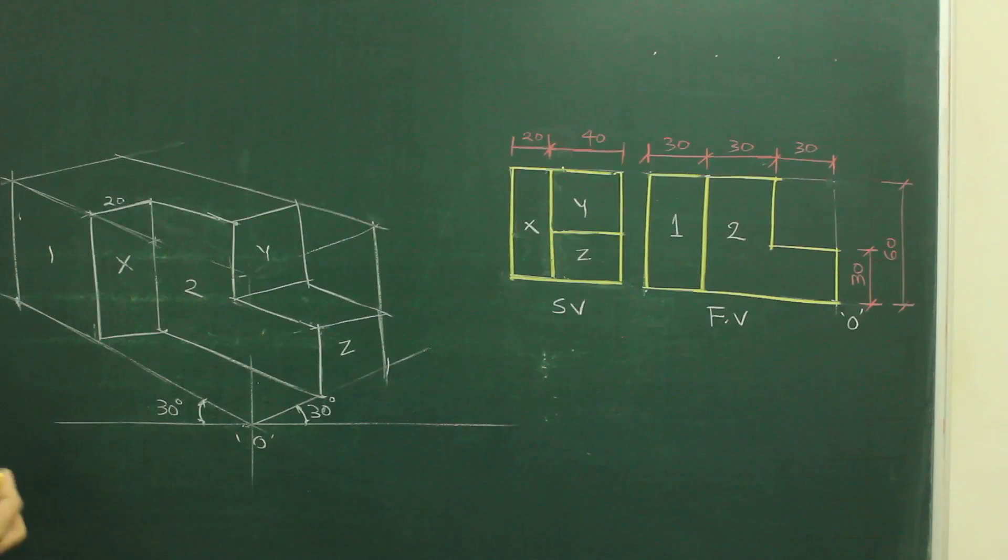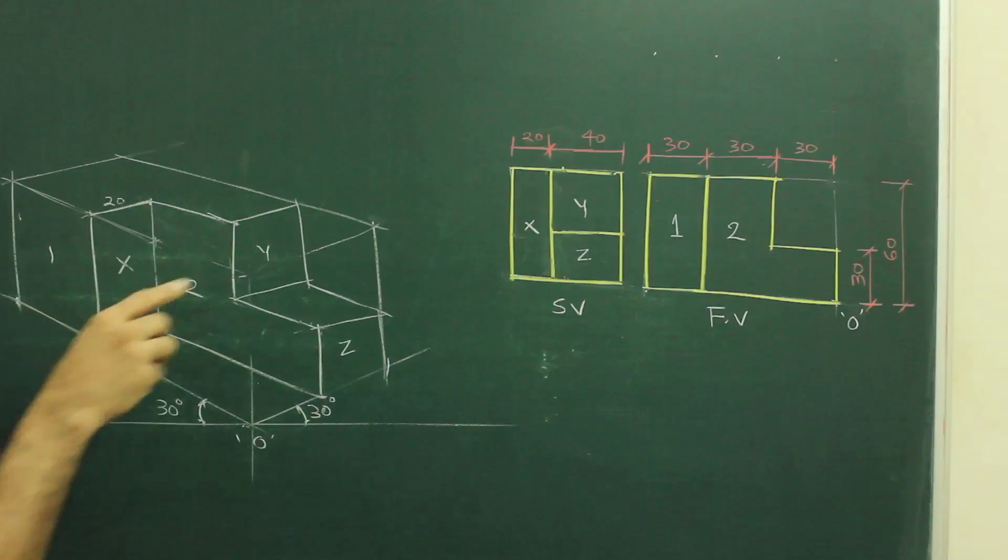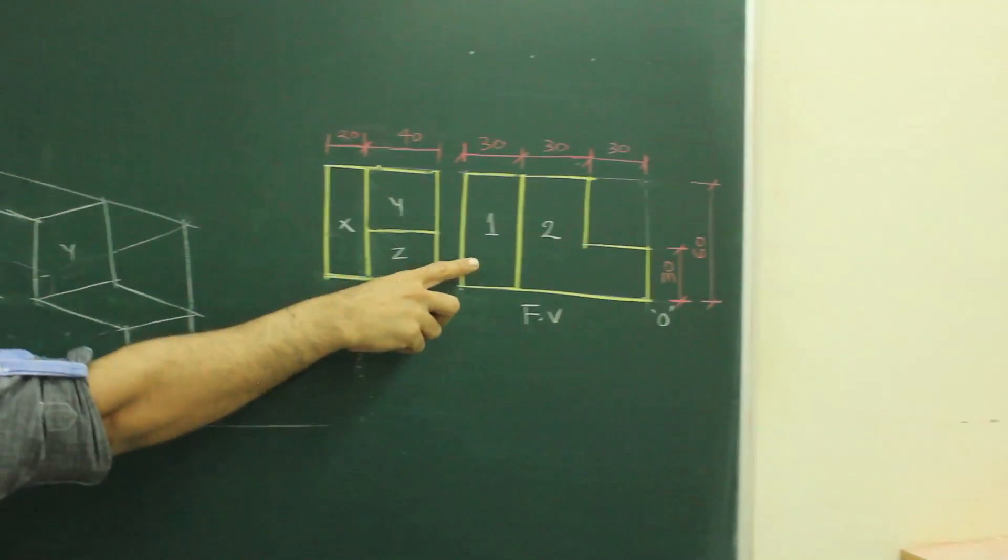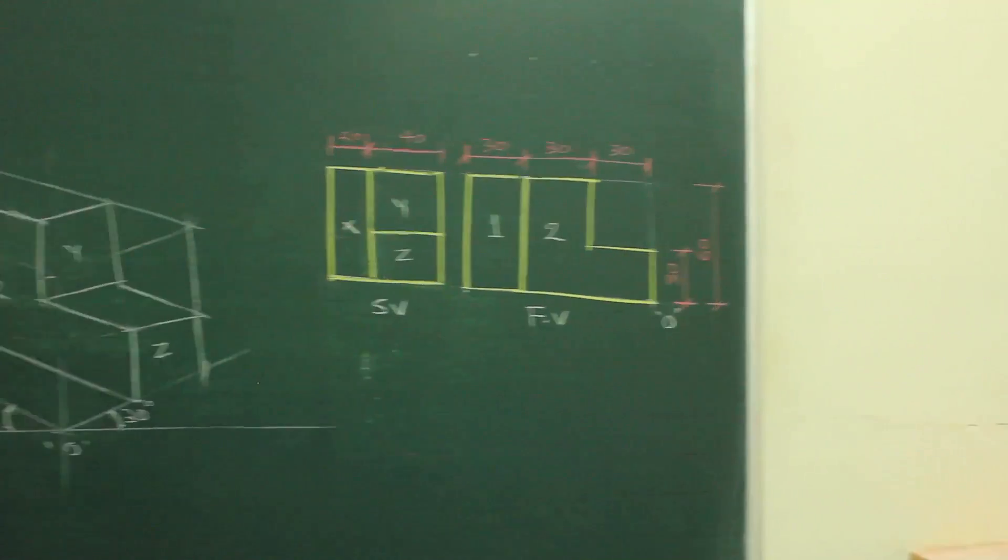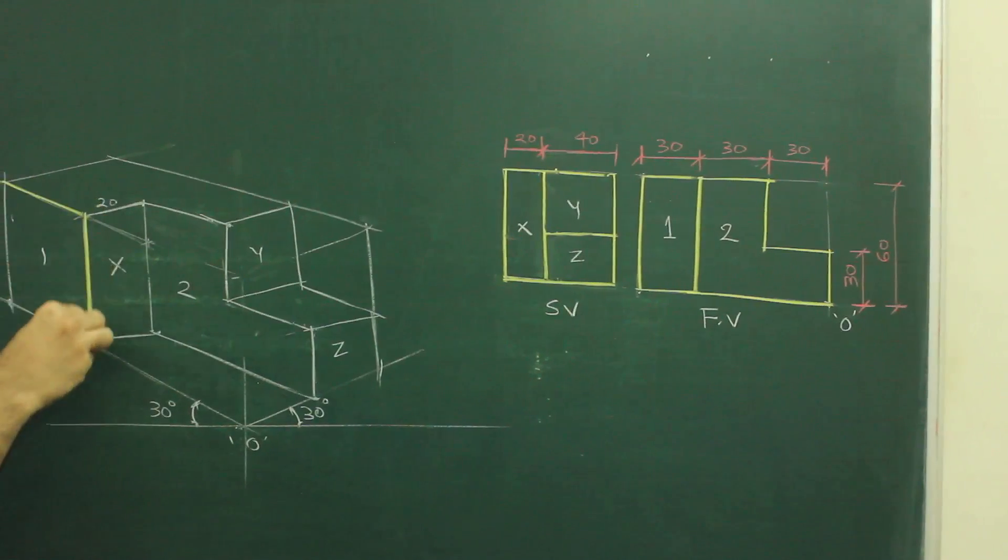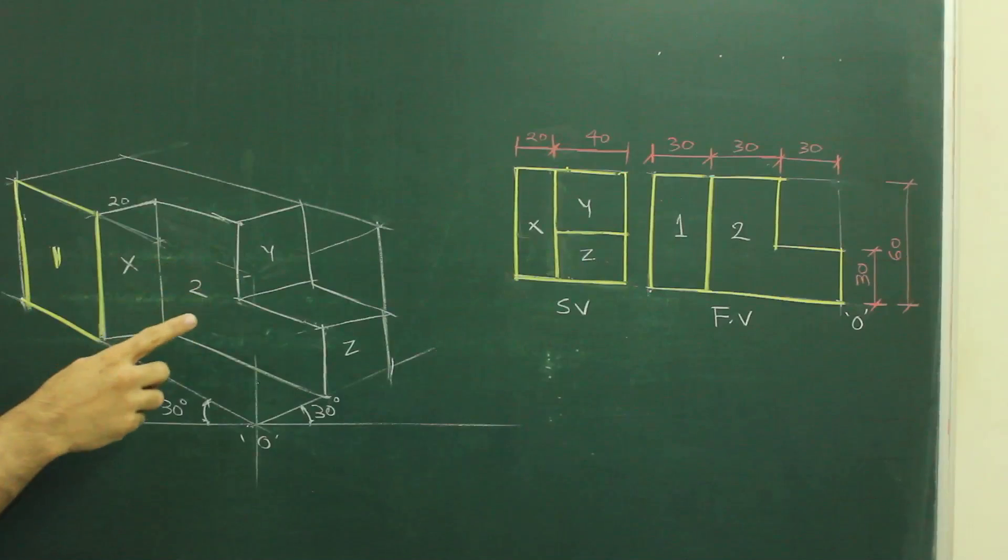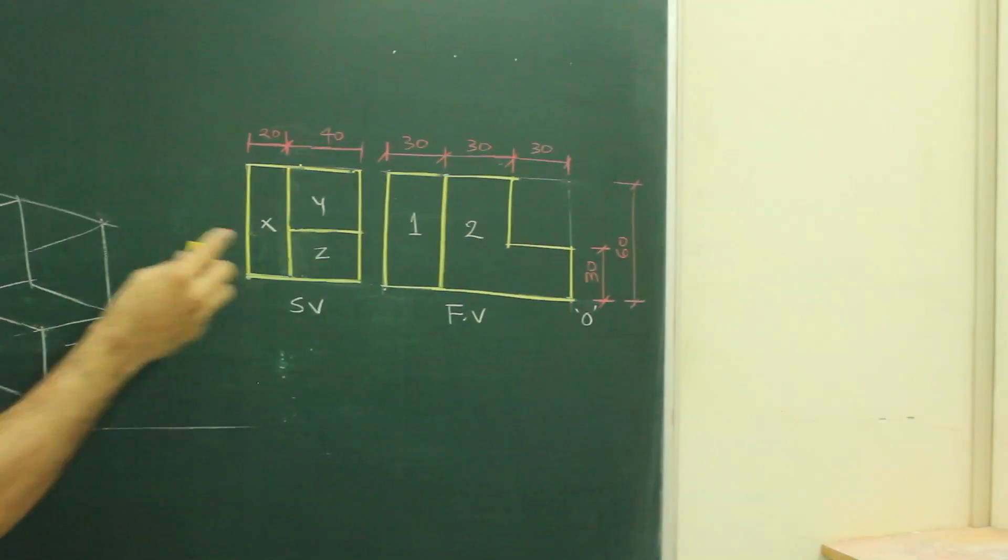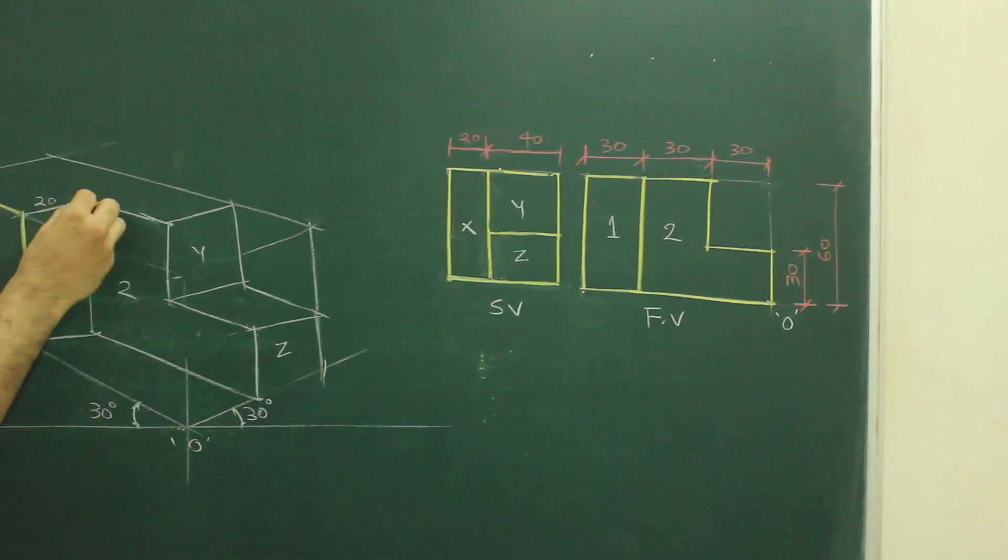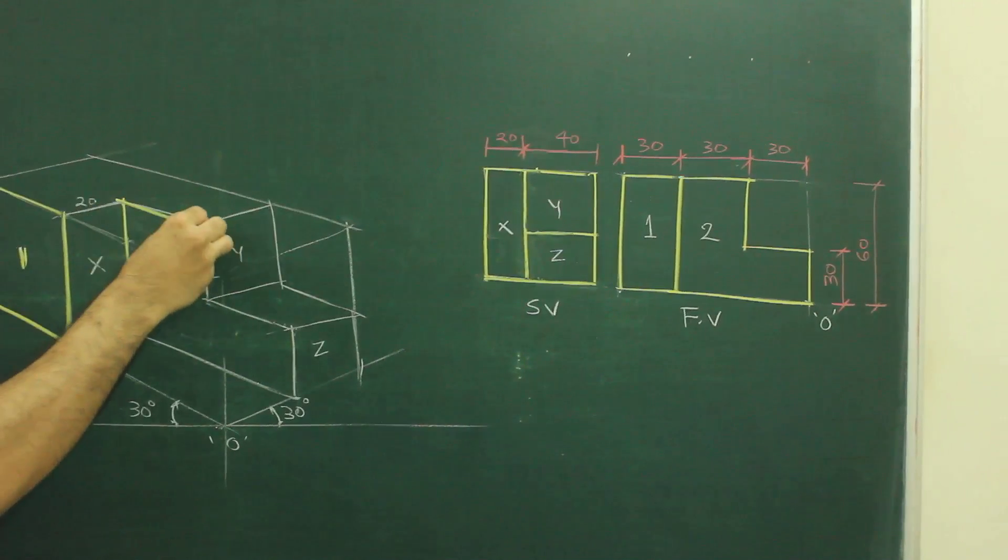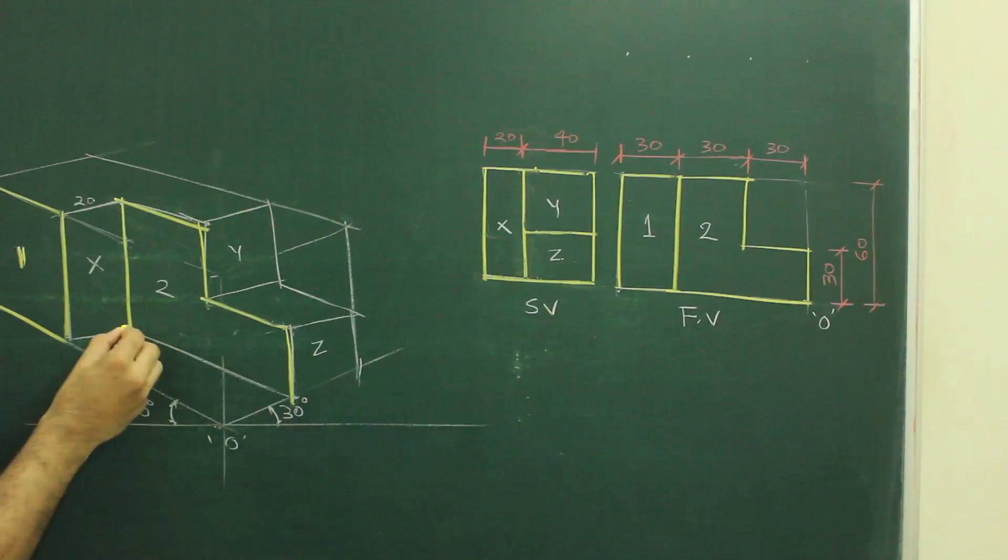Once again I will just explain it to you. If you see the main diagram, this is part 1. Then if you see part 2, see this, which is behind. How much behind? 20 behind. So that is part 2.